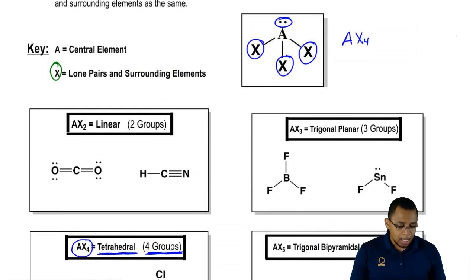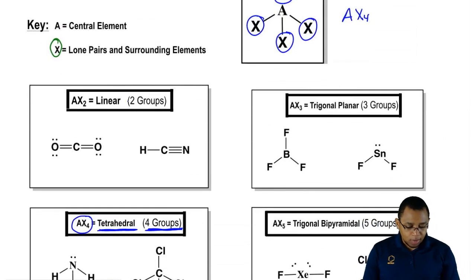Let's go through each of these. If you're AX2, that means your central element is surrounded by two groups. Again, those groups could be a lone pair and a surrounding element or two surrounding elements.